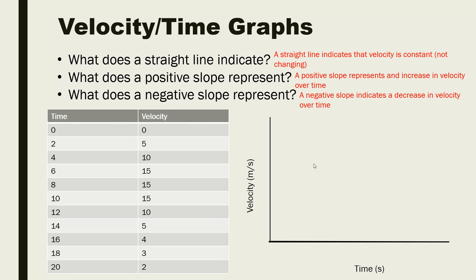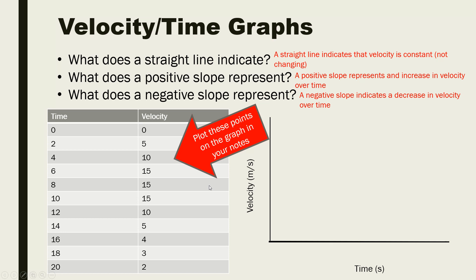Now pause the video and use the data in the data table to create a line graph showing the relationship between velocity and time. You should see that velocity increases until about 10 seconds, and then starts to decrease again. So you have a positive slope, and then after about 10 seconds you see a negative slope — the object is speeding up and then slowing down.